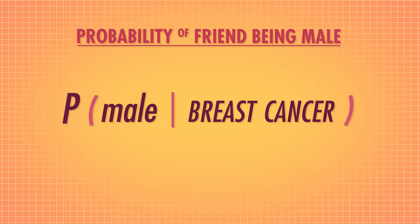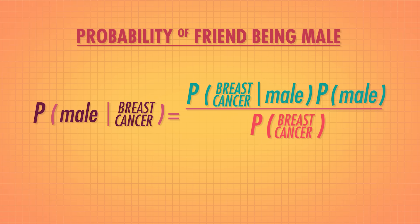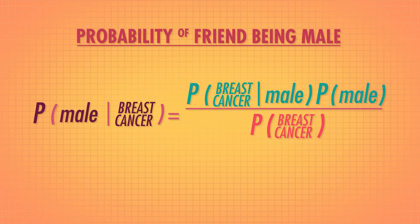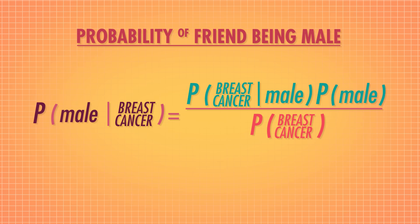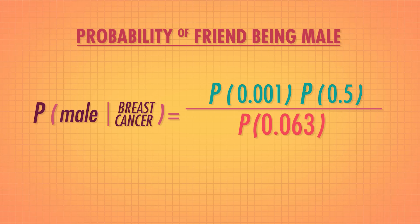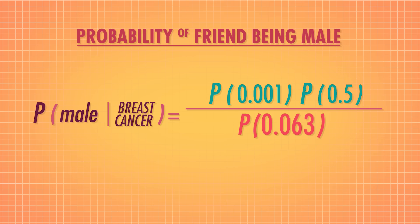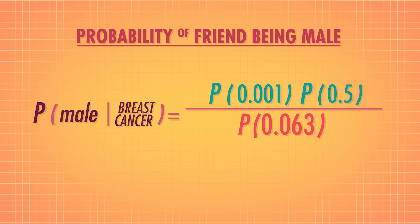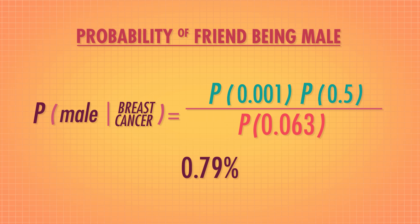You want to know the probability that your sister's friend is male, given that you know that friend has breast cancer. Using Bayes' Theorem, we can calculate this probability. The probability of being male given that you have breast cancer is equal to the probability of having breast cancer given that you are male, times the probability of being male, divided by the probability of having breast cancer. Thanks to government health agencies, we know many of these statistics. The probability of getting breast cancer given that you're male is 0.001, and we'll assume the probability of being male is 0.5. The overall probability of getting breast cancer is 0.063. Armed with your facts, you calculate the probability that your sister's friend is male is only about 0.79%. So not very likely, but maybe more likely than you would have anticipated.